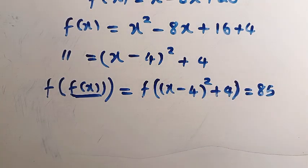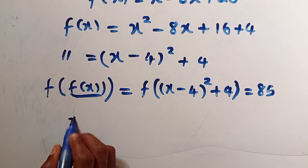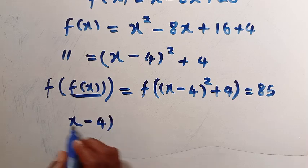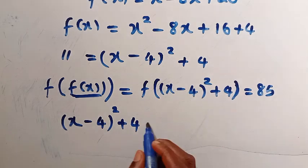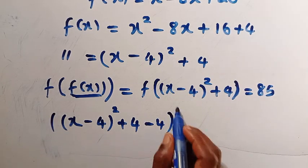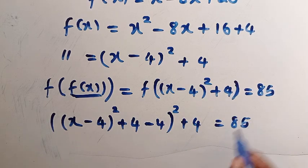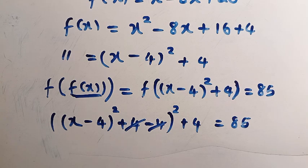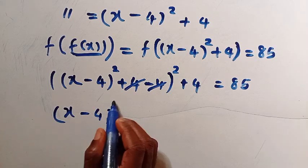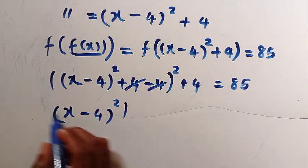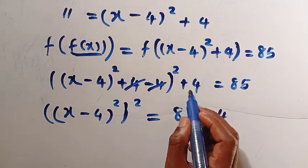Since f of x equals x minus 4 squared plus 4, we replace every x with the whole expression x minus 4 squared plus 4. So we get: (x minus 4 squared plus 4) minus 4, all raised to power 2, then plus 4 outside, everything equals 85. The plus 4 and minus 4 cancel each other, leaving x minus 4 squared, all raised to power 2, equals 85 minus 4.